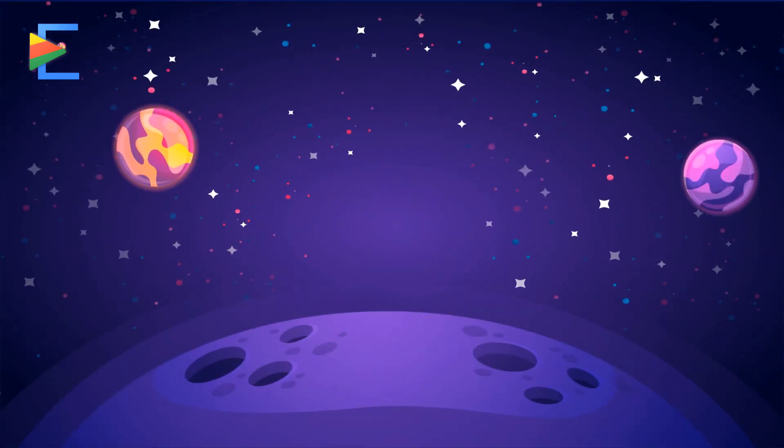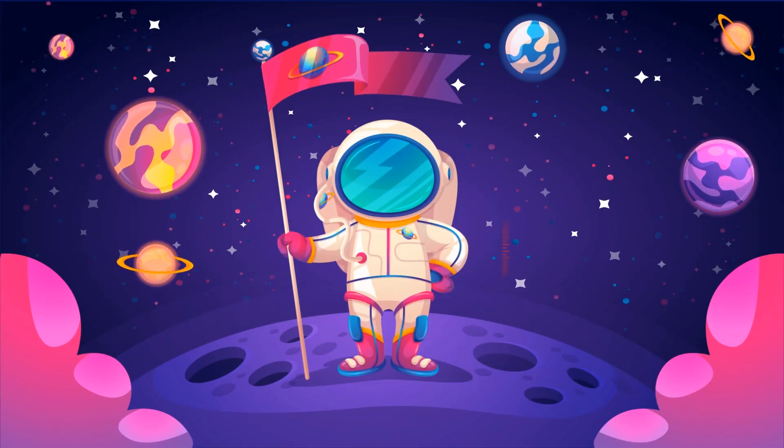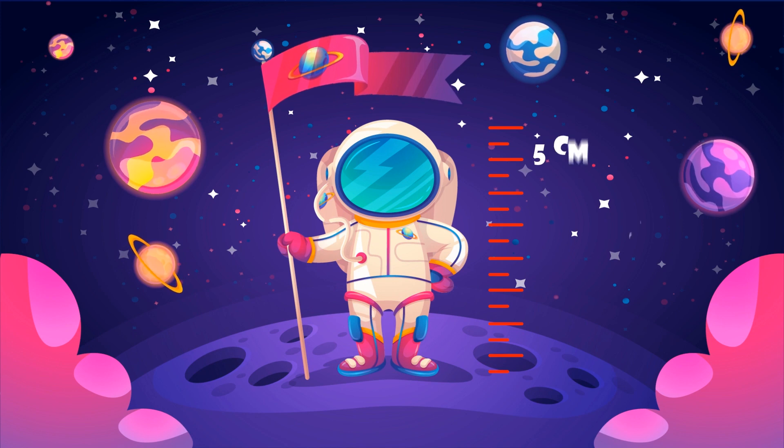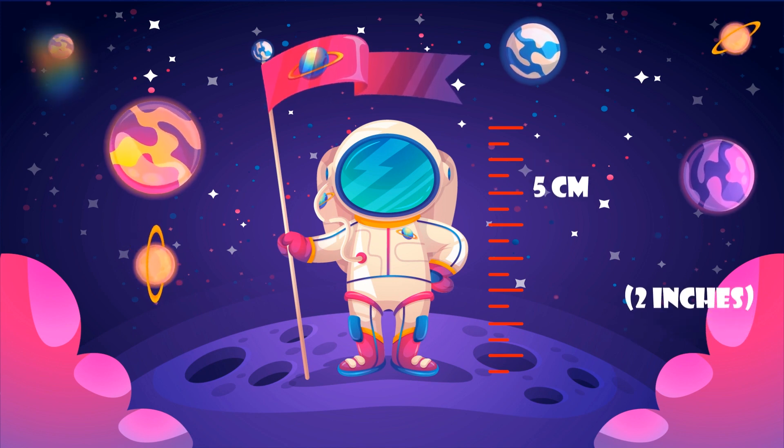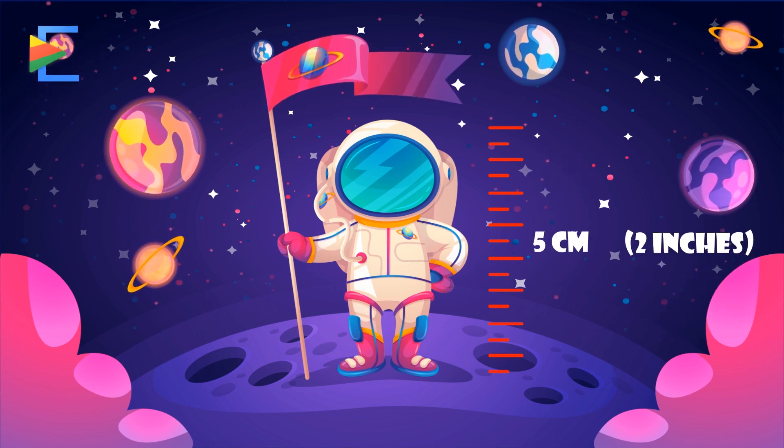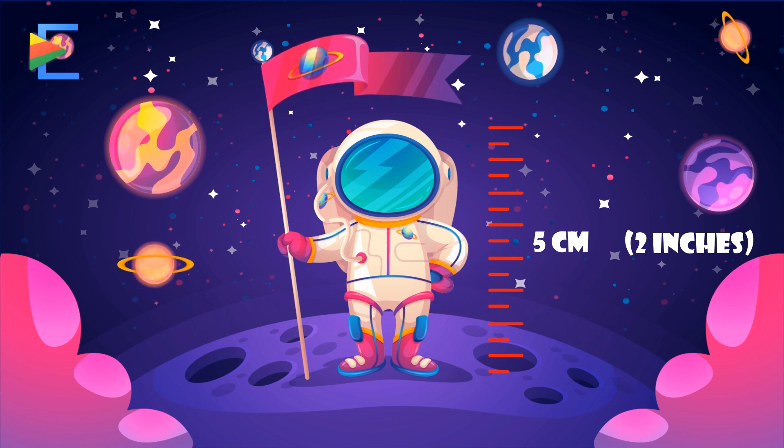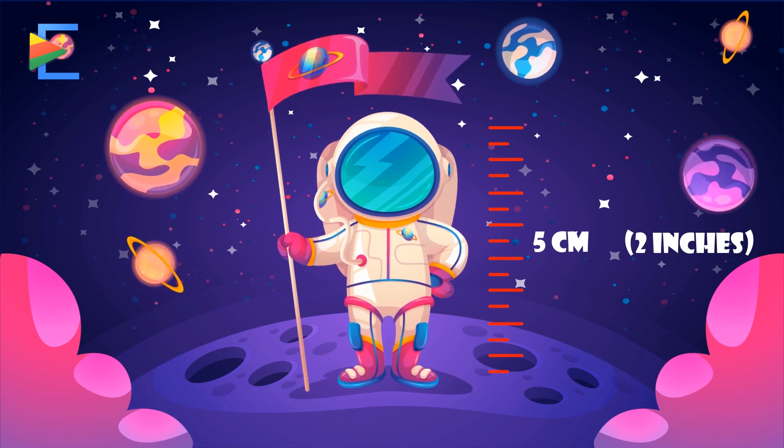Astronauts grow approximately 2 inches, or 5 centimeters in height, when in space. This is due to lack of gravity in space that causes the disks between the vertebrae to expand a little.